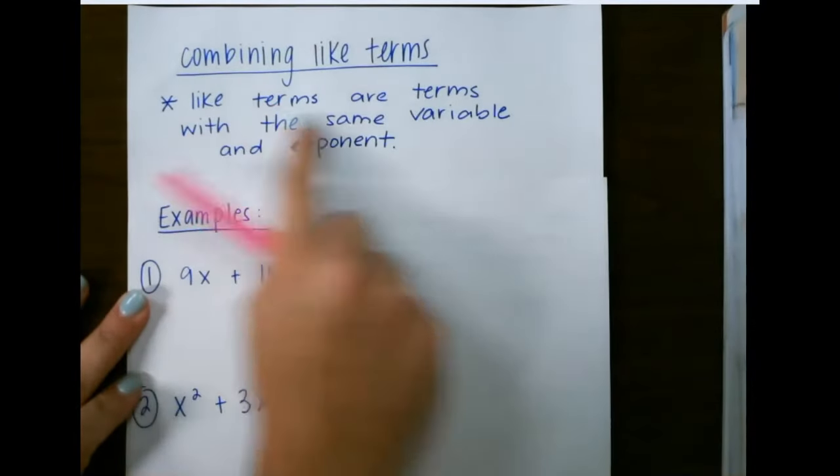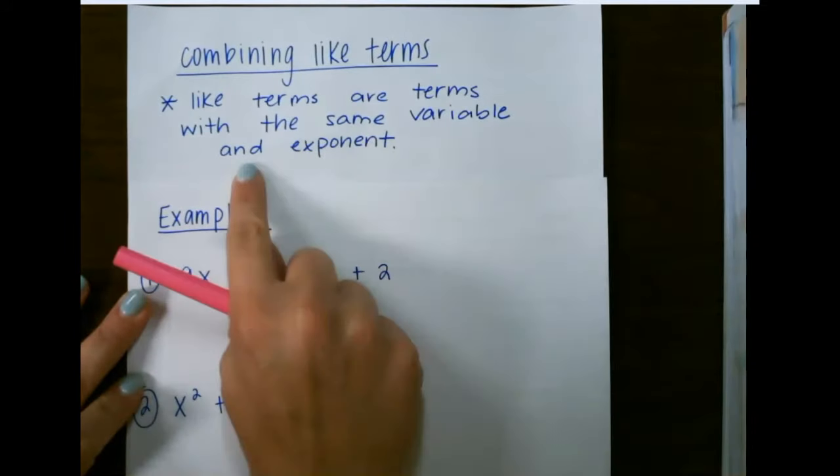Combining like terms. Like terms are terms with the same variable and exponent.